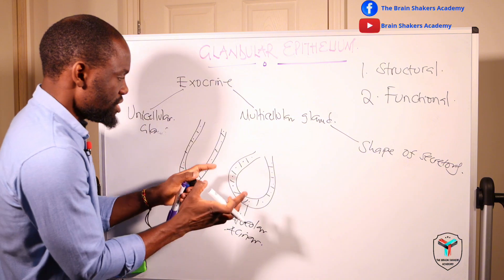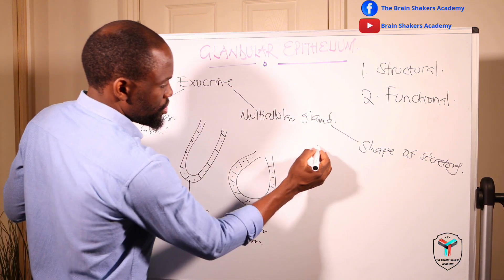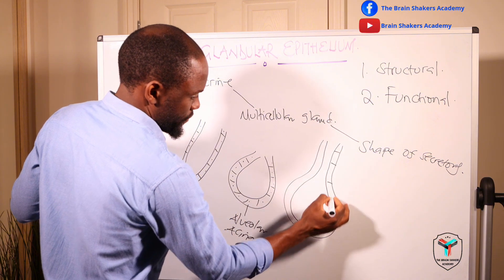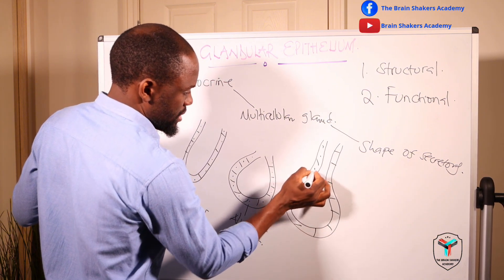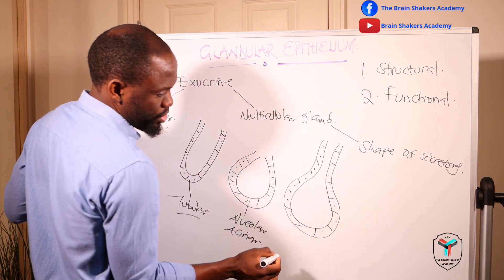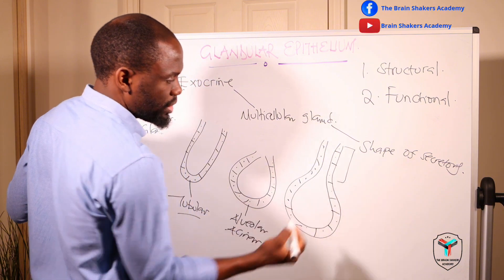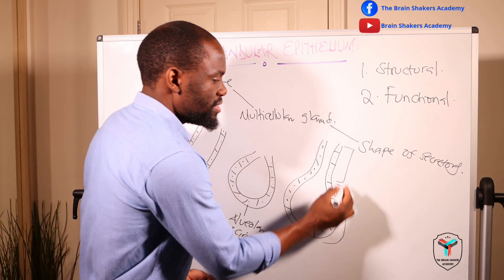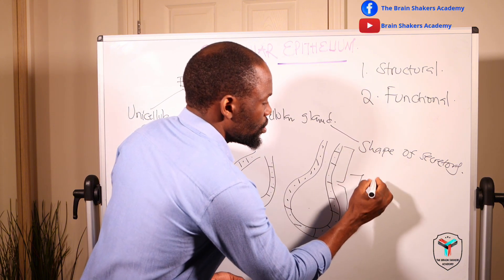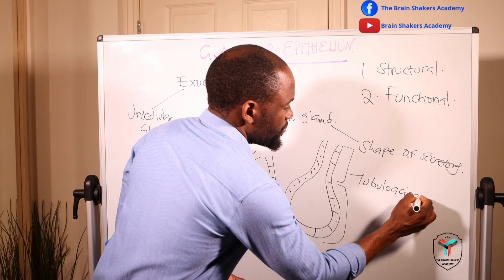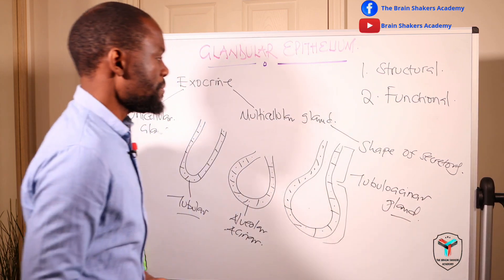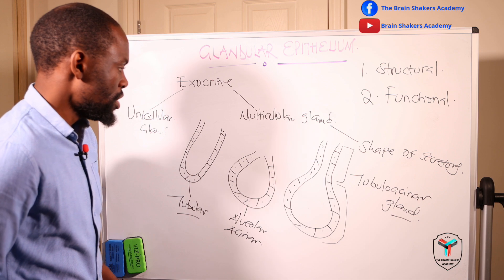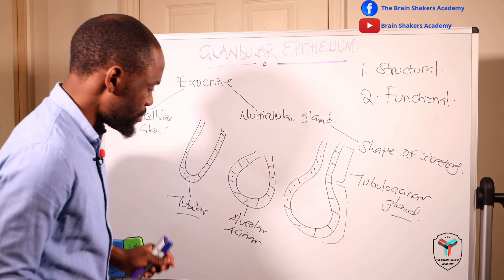If it is a combination of both the alveolar and the tubular — where cells line both a tubular portion and an acinar portion, both producing the secretory product — then this is called a tubuloalveolar gland. So the classification by shape of secretory portion gives us three types: tubular, acinar, or a combination of both — the tubuloalveolar.